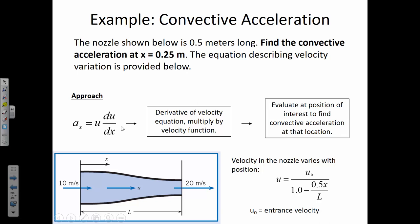Our formula for velocity as a function of position is: u equals u-naught divided by the quantity 1 minus 0.5x divided by L. The definition of convective acceleration is velocity at a certain point multiplied by du/dx. So we have to take the derivative of our velocity function with respect to x. To do that, we're going to use the chain rule.